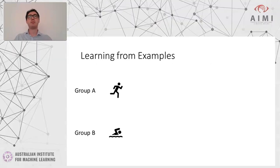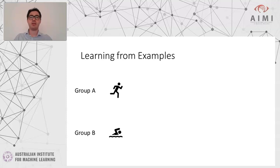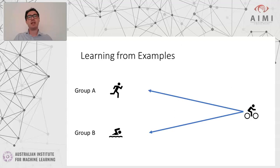Let's say you want to build a classifier to differentiate between these two groups — group A and group B — and I'll give you one example for each group. Now let's say we have a new image and I want you to choose in which group you're going to put this new image.